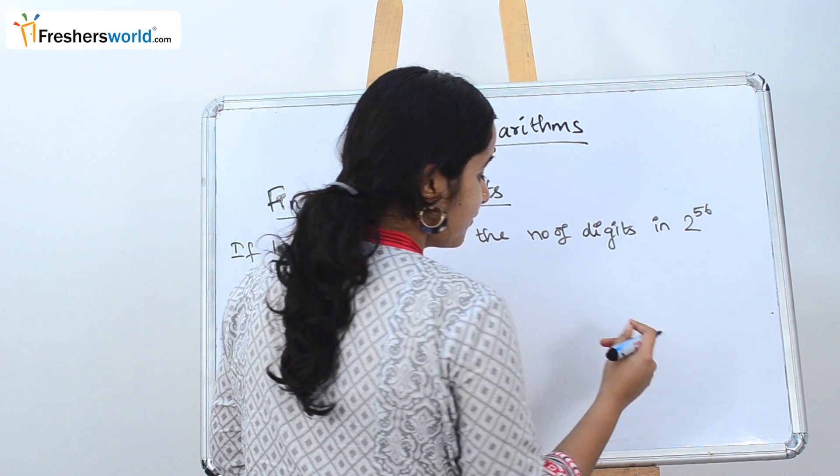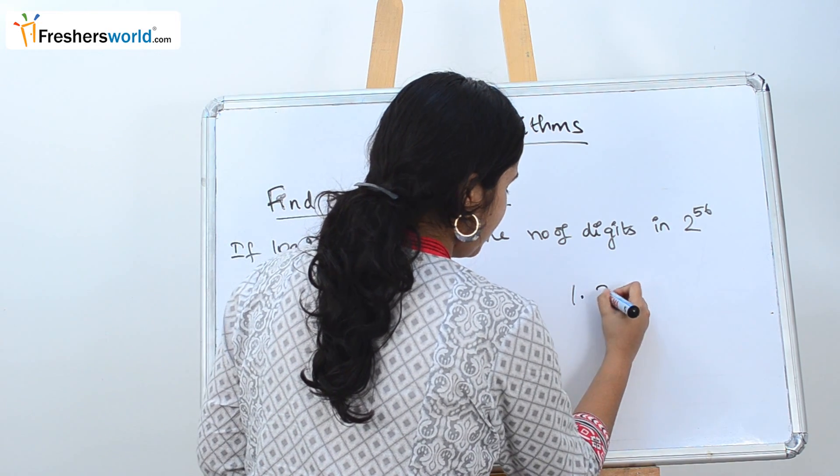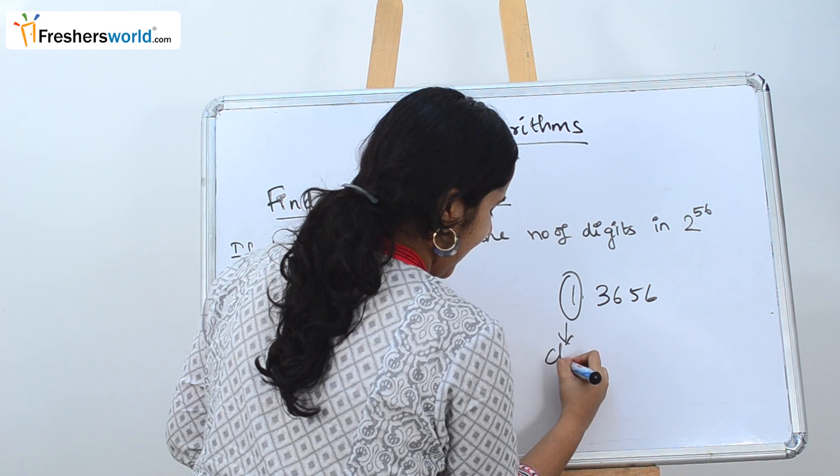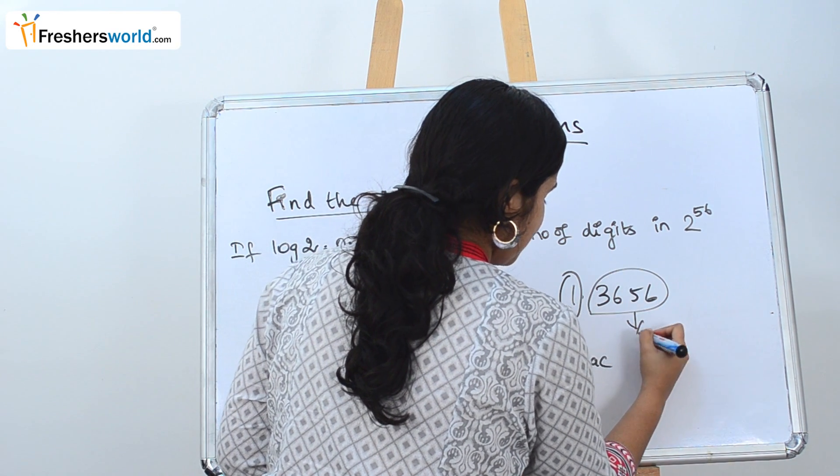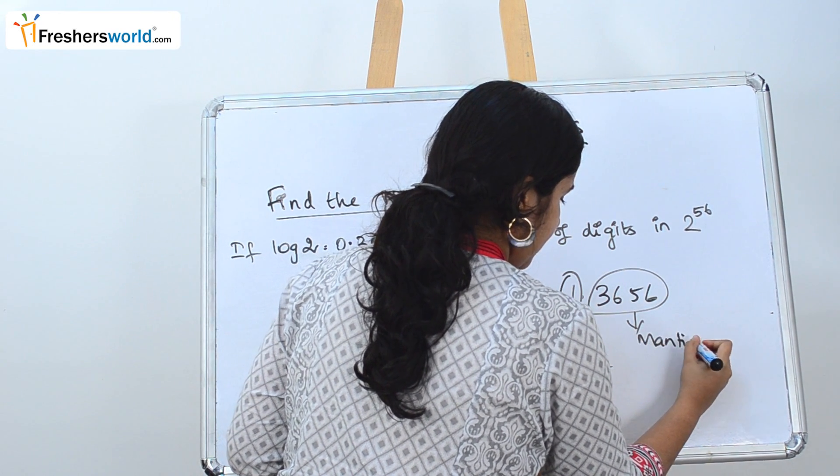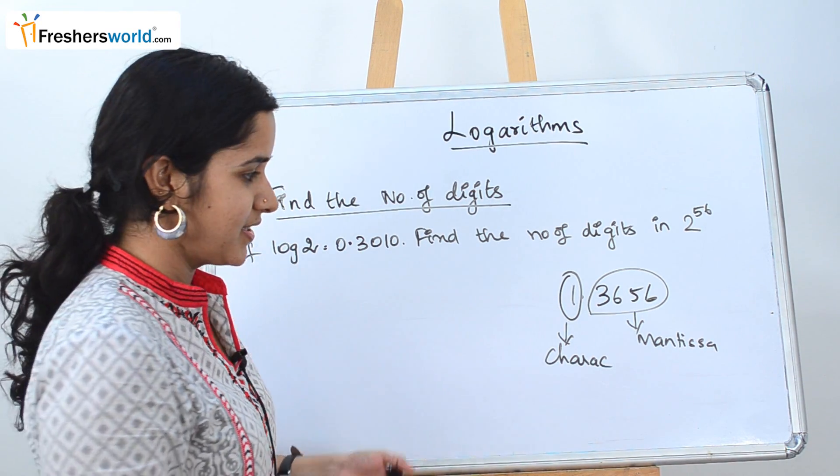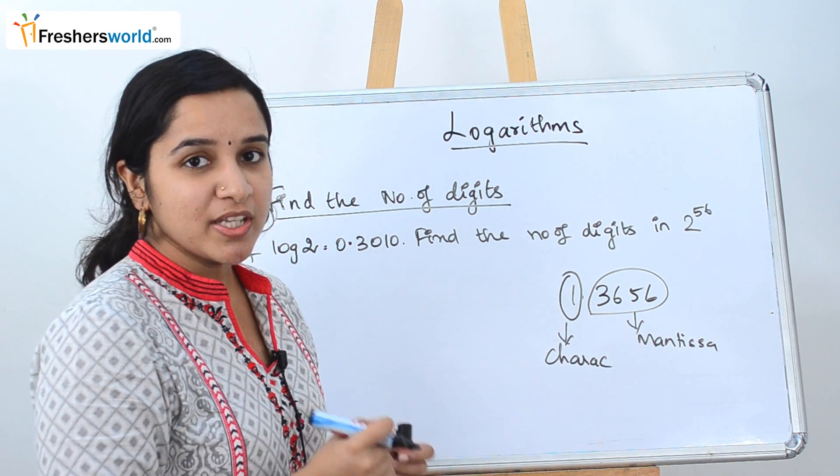Before we solve the problem, let me explain a concept. Let's say if there is a value given 1.3656. This part is called the characteristic, and this part after the decimal point is called the mantissa. So if you see a question where they are talking about mantissa and characteristic, this is what they mean. So now let's go to the problem.